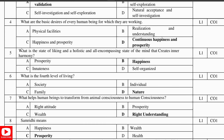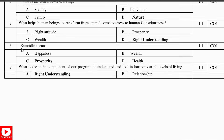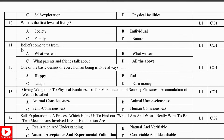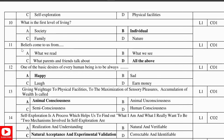Question 5: What is the state of liking and holistic, all-encompassing state of mind that creates inner harmony? Answer: Happiness. Question 6: What is the fourth level of living? Answer: Nature. Question 7: What helps human beings to transform from animal consciousness to human consciousness? Answer: Right understanding. Question 8: Samvidhi means prosperity. Question 9: What is the main component of our program to understand and live in harmony at all levels of living? Answer: Right understanding. Question 10: What is the first level of living? Answer: Individual.